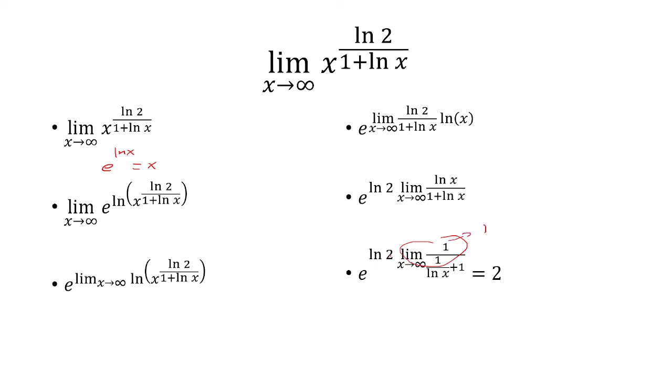So we have e to the natural log of 2 which by this property is equal to 2. And that is our limit.